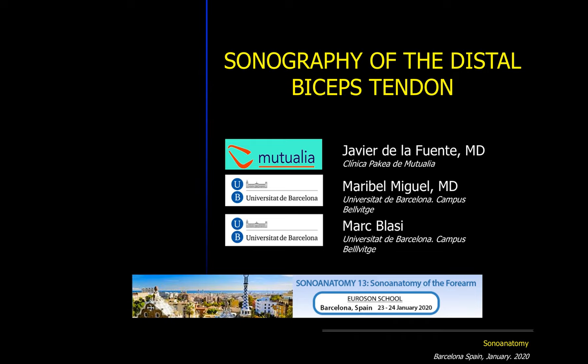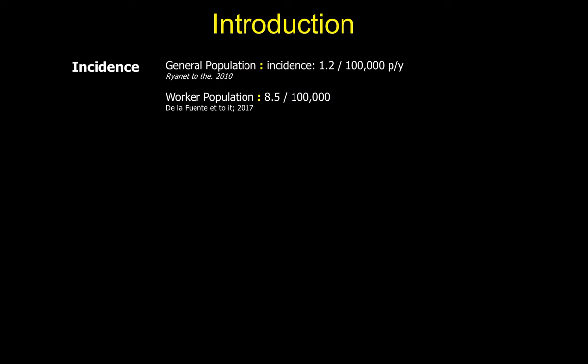I thank Euler and his anatomy committee for inviting me again this year to talk about distal biceps tendon injuries. This type of injuries are relatively uncommon, but in recent years the diagnosis is really increasing. Although the incidence of lesions in the general population is low, our studies show much higher values — up to 9 cases per 100,000 inhabitants.